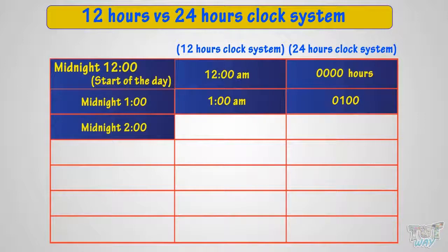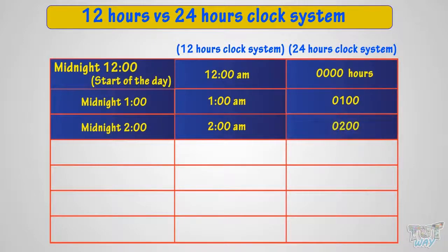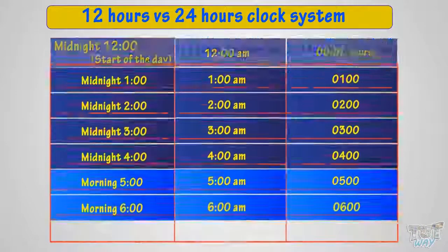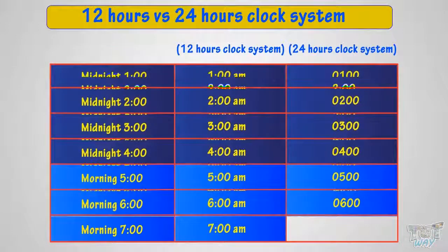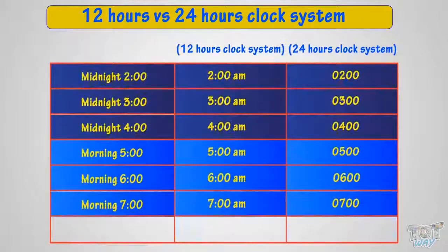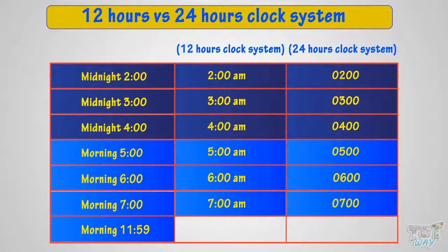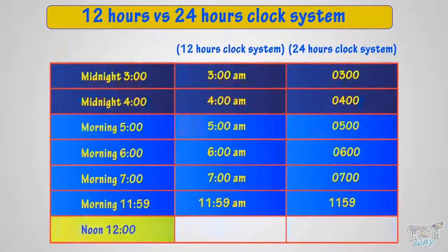2 in the midnight is called 2 a.m. in the 12-hour clock system. In the 24-hour clock system, it is called 0200 — that is, 200 hours. 7 in the morning is called 7 a.m. in the 12-hour clock system. 1 in the noon is called 1 p.m. in the 12-hour clock system.